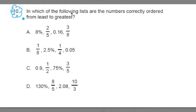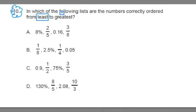It says: In which of the following lists are the numbers correctly ordered from least to greatest? We have these four options — A, B, C, and D — and we're trying to organize them from the smallest, or the least, to the greatest, or the largest.